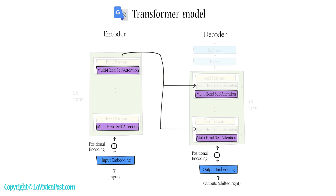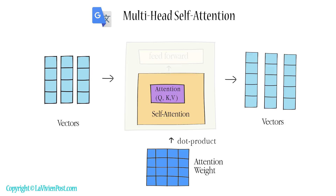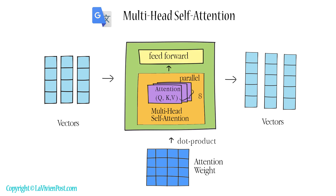The attentional mechanism compares a given word to every other word, producing an attention weight for every other word in the sentence. Since there is no sequence, the self-attention functions can run in parallel. A multi-head self-attention has eight parallel attention heads, whose results are concatenated and projected as output and sent to a feed-forward network. The parallelization takes full advantage of modern hardware such as TPUs and GPUs, making the transformer efficient and fast.